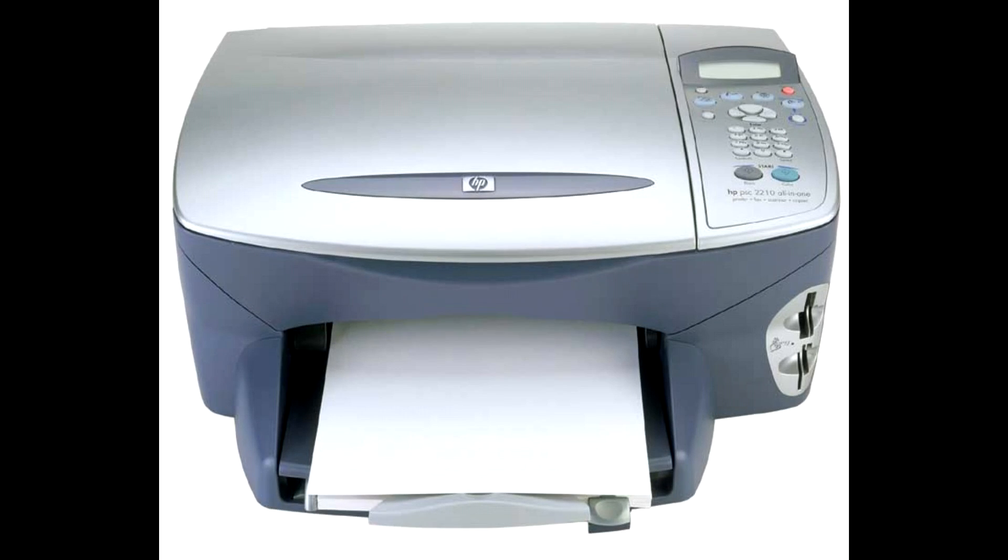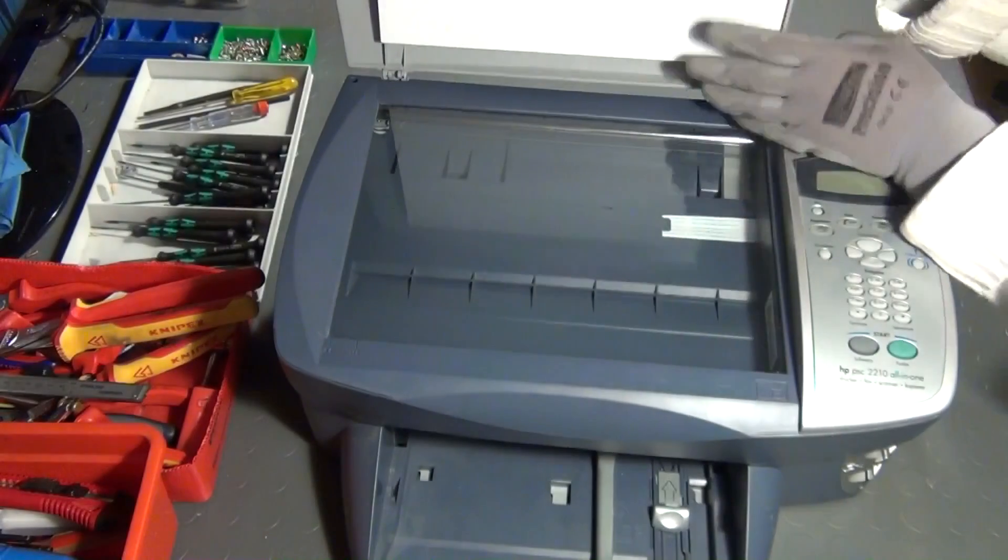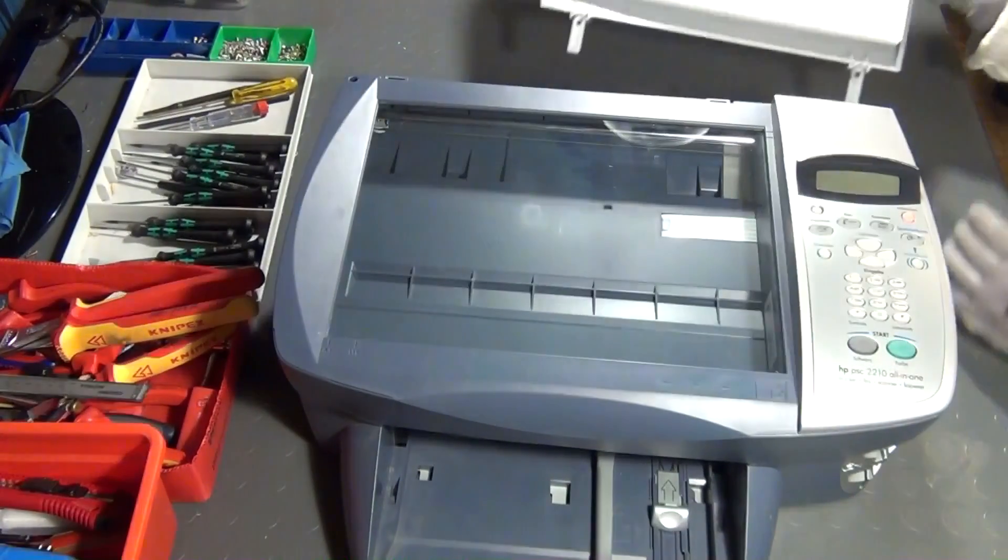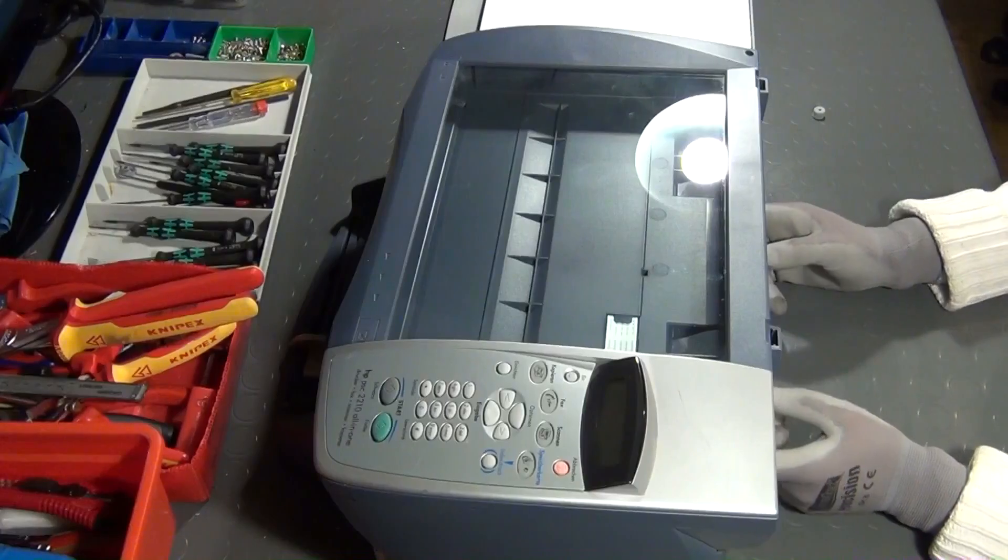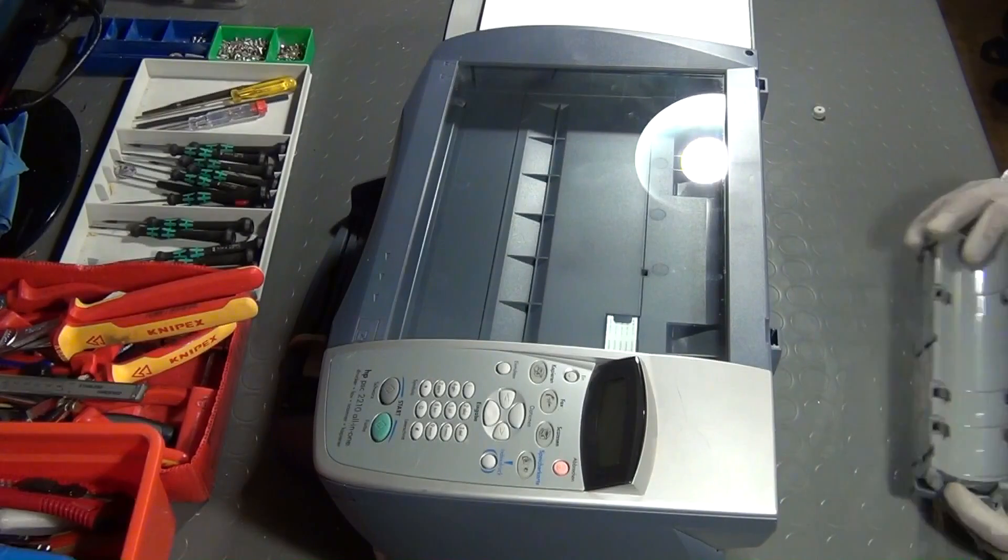The procedure of disassembling will of course vary with each model and brand. The essentials however will always be the same. First the scanner's cover and then the rear access door can just be pulled out and put away.